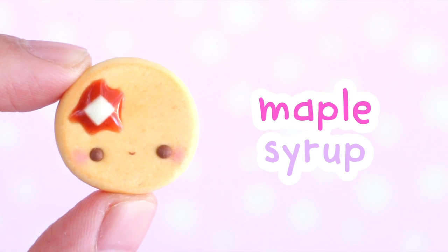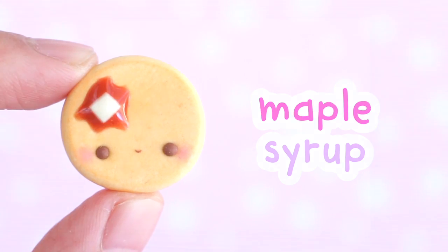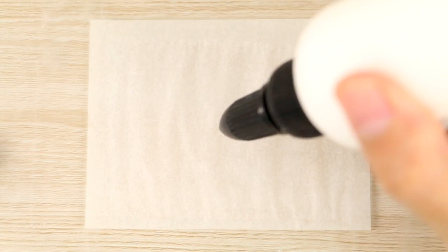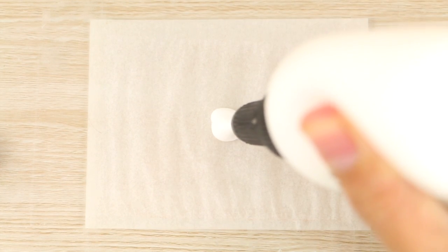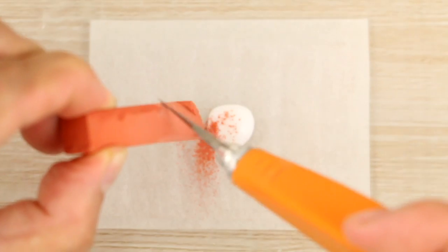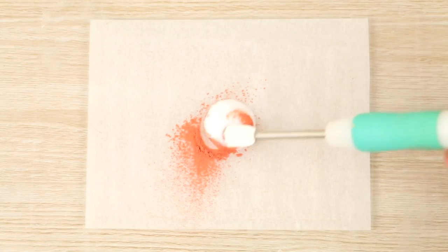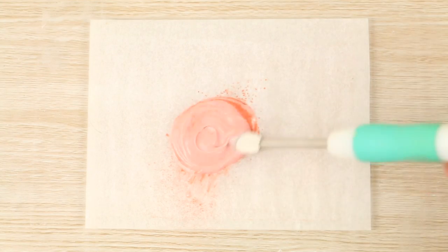And now onto some maple syrup. I like to squeeze out a tiny bit of translucent liquid sculpey and then mix in some brown chalk pastel until it's a nice medium brown color. And this mixture would be great for making toffee or caramel with different colors.